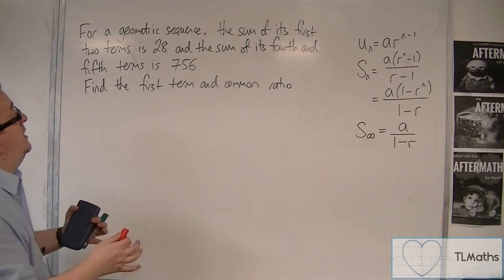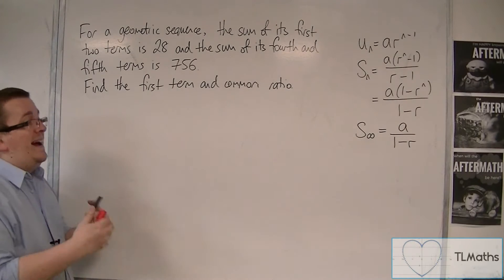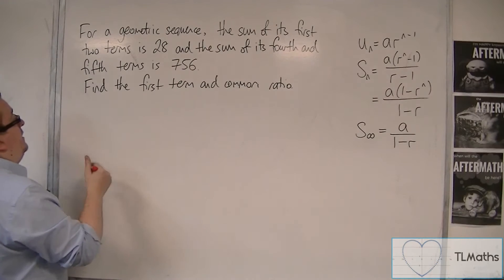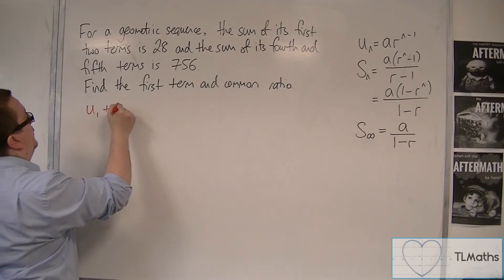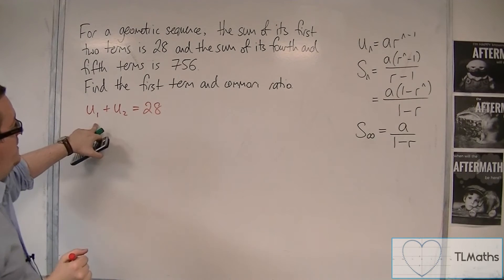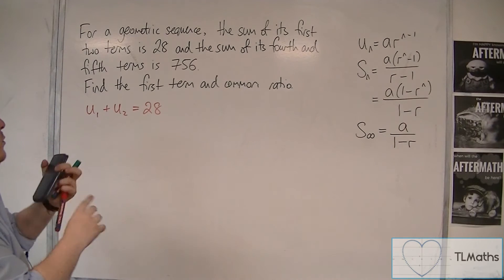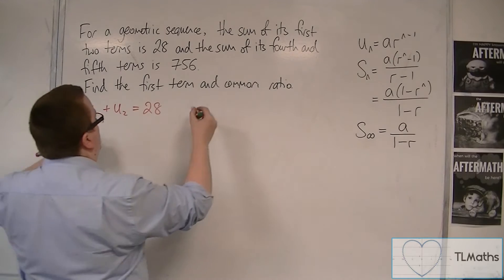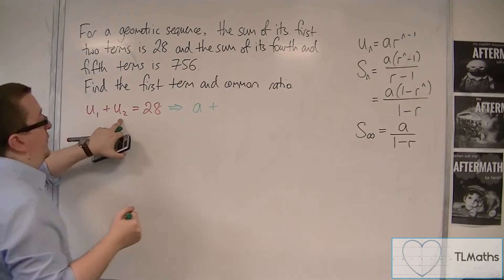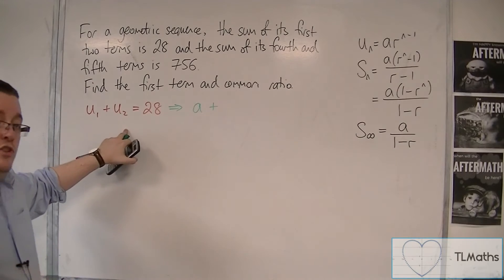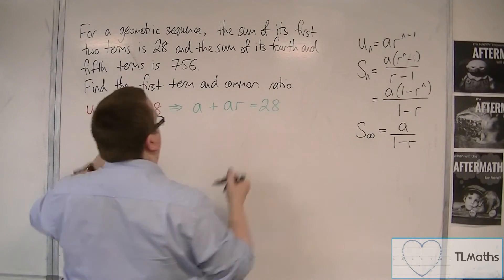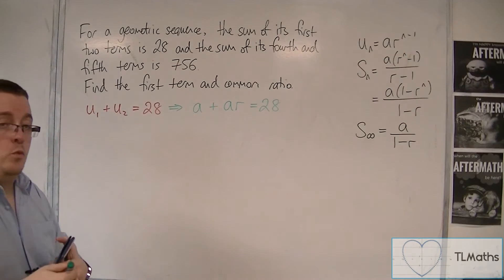So if the first two terms add up to 28, then we can say that the first term plus the second term is 28. The first term is equal to a, so that's a, plus the second term, which is a times r, and that's equal to 28. So that's one equation that I'm going to work with.